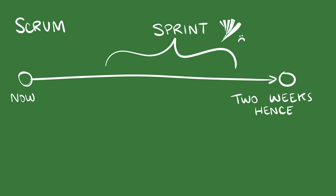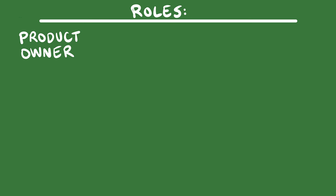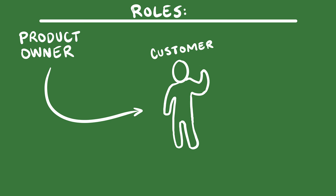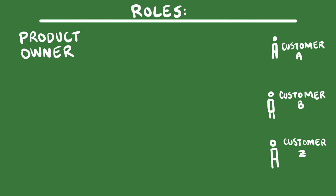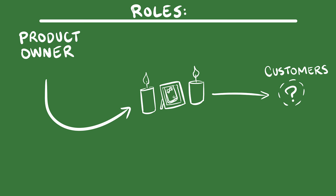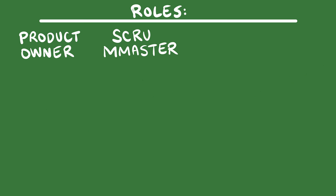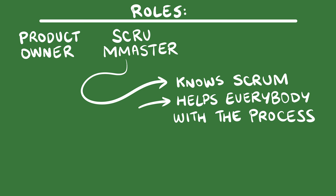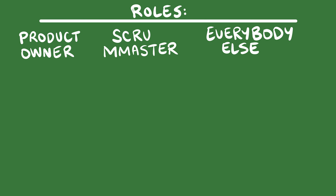Scrum contains the following mandatory roles. The product owner represents the customer of your product. As much as possible, it's best if your product owner actually be the customer of your product, but that might not necessarily be possible. If your product serves a large number of customers at once, it's recommended that you fuse them together under spectacular heat to form one giant super customer. On the other hand, if your product is too new to have customers, you may need to erect an oracle or small shrine to represent them. The Scrum master is the person who knows Scrum on the team. They help everybody cope with the process and try their best to keep scutwork out of the hands of the team. The third mandatory role is everybody else. Their responsibility is not to be the product owner or Scrum master. If you see one of these people becoming a product owner, alert the authorities immediately.